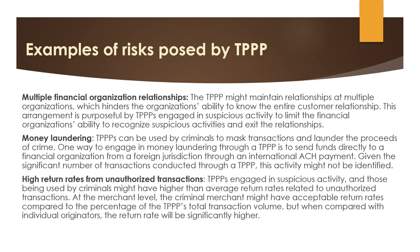TPPs can be used by criminals to mask transactions and launder the proceeds of crime. One way is to send funds directly to a financial organization from a foreign jurisdiction through an international ACH payment. Given the significant number of transactions conducted through TPPs, this activity might not be identified. TPPs engaged in suspicious activity may also have higher-than-average return rates related to unauthorized transactions; at the merchant level the return rates might look acceptable, but compared with individual originators they will be significantly higher.